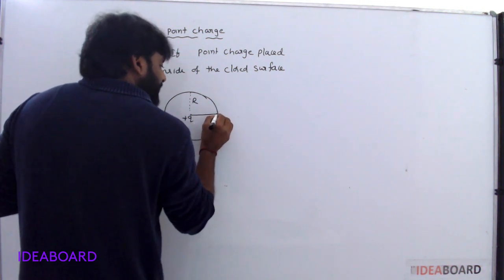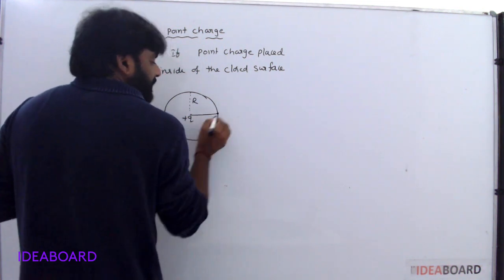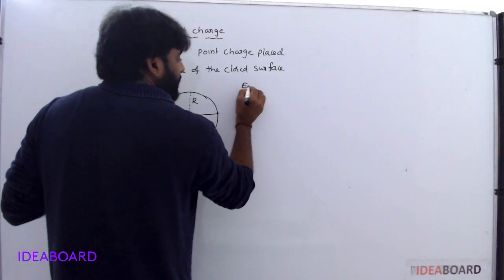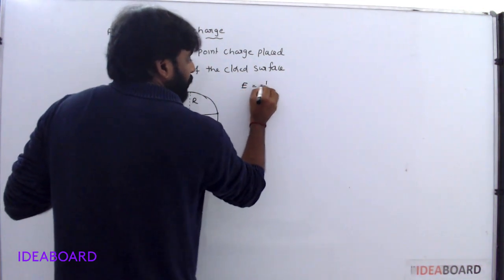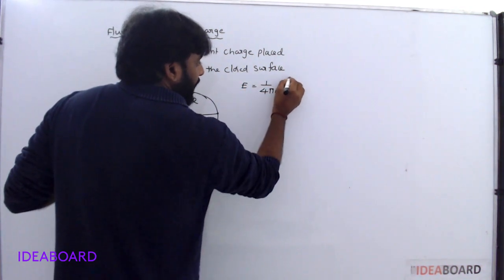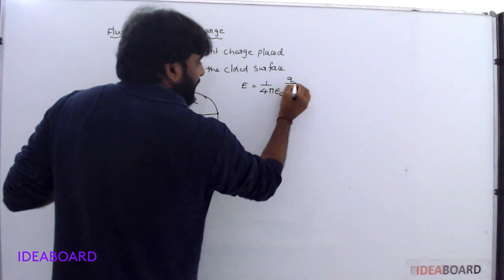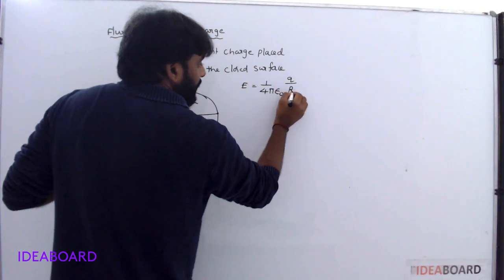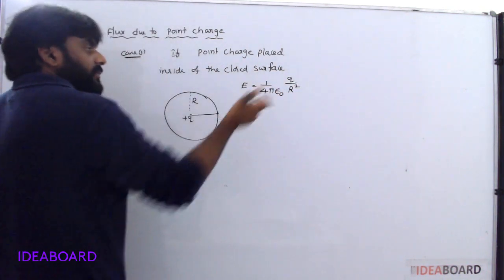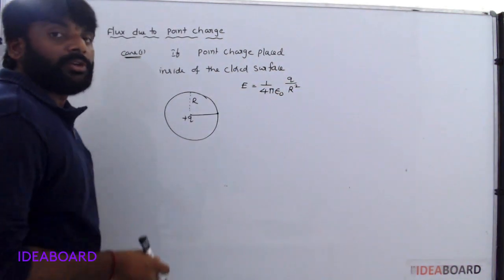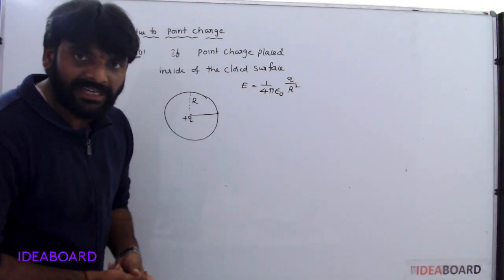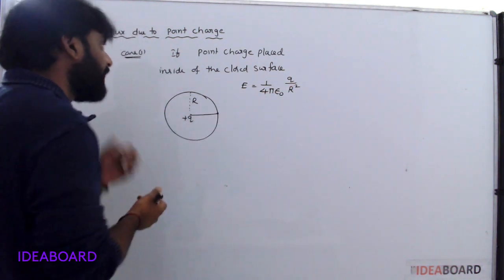Due to this charge, the electric field intensity on the surface is E equal to 1 by 4 pi epsilon naught, Q by R square.